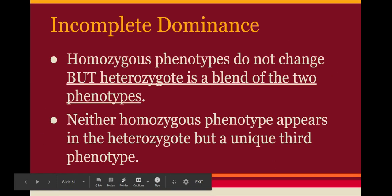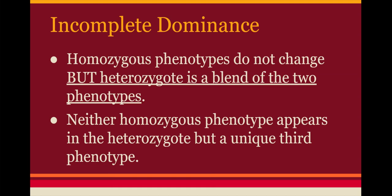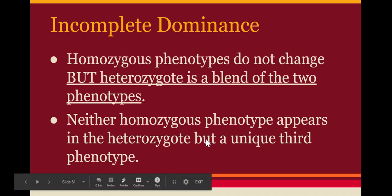Your next topic is incomplete dominance. This is again where the heterozygote shows a unique third phenotype, but it is different from co-dominance. In co-dominance, the heterozygote shows both of the other phenotypes — like the black-and-white feathered chicken. In incomplete dominance, the heterozygote is a blend of the two homozygotes — so instead of being black and white, the chicken would be gray. Think of it as paint-can genetics: you get a blend of the two extremes. Homozygotes are unchanged.